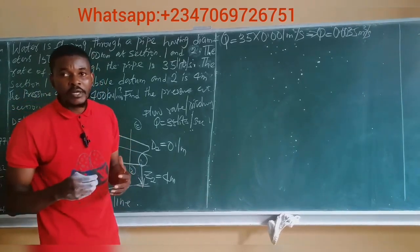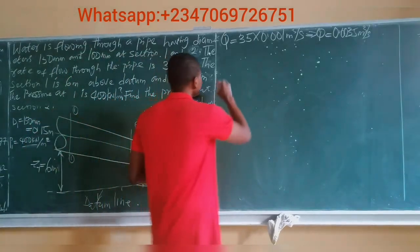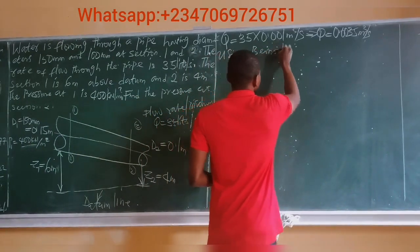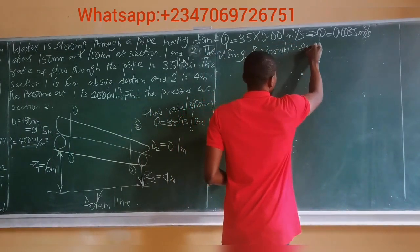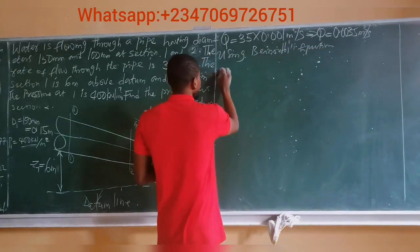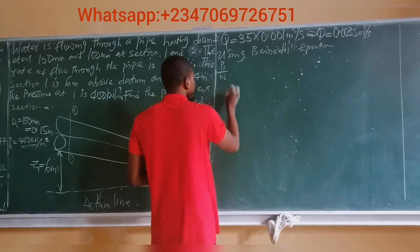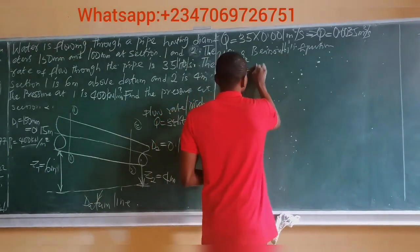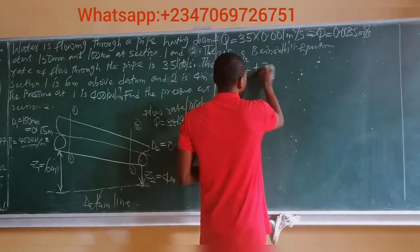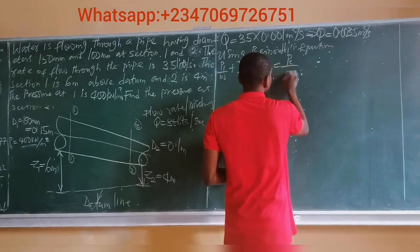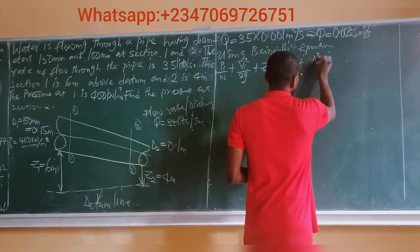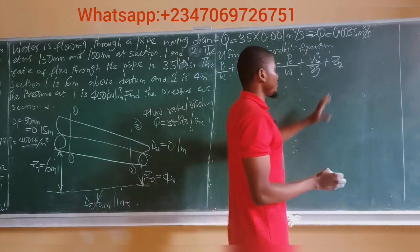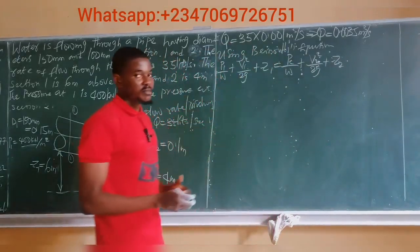To solve this, we employ Bernoulli's equation. Using Bernoulli's equation, the equation states: P1 over specific weight plus V1 squared over 2G plus Z1 equals P2 over specific weight plus V2 squared over 2G plus Z2. In case there are losses, you add the losses. But since there are no losses, the equation remains as stated.